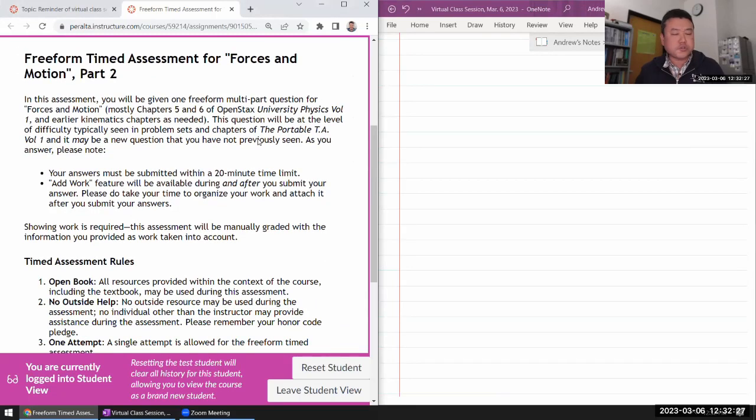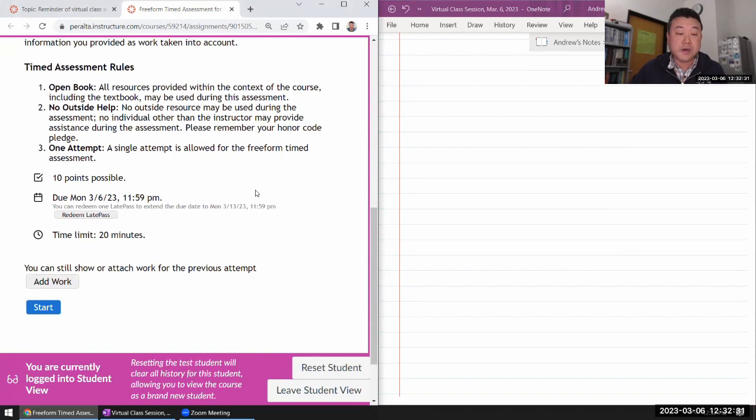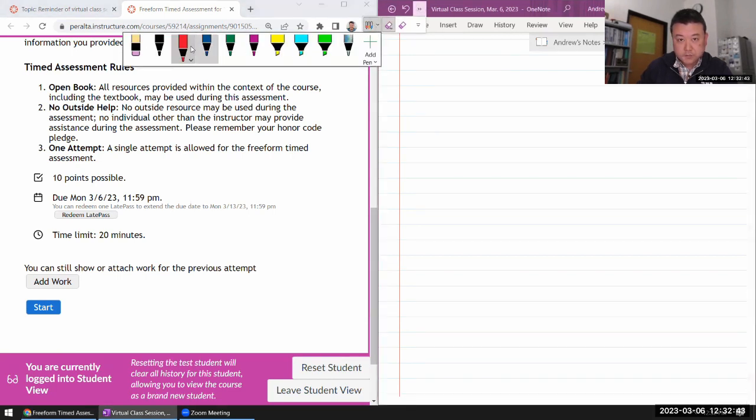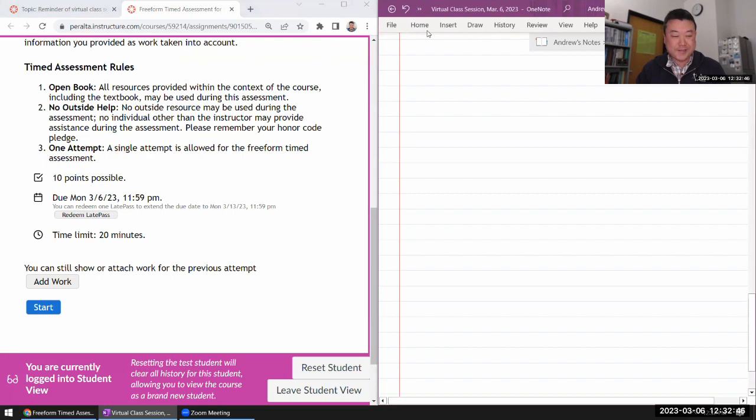When you do part two, you should anticipate seeing more than one object. That's how I've decided which question goes into part one and which question goes into part two. So I think I'm all set. As I keep saying, 20 minutes of time is a really short amount of time, even for me. So I'm starting at 12:32. I have until 12:52 or so.